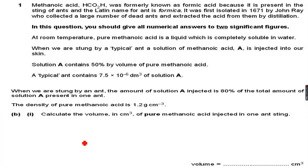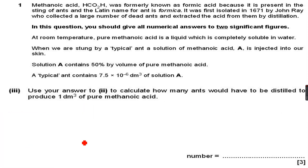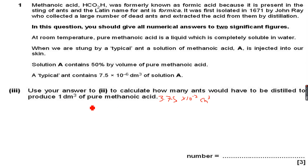Let's go back — use your answer to question 2, which was 3.75×10⁻³ centimeter cube. Use that answer to calculate how many ants would have to be distilled to produce 1 dm cube of pure methanoic acid. So this is 1 dm cube, and we need to convert it: 1 dm cube equals 1000 centimeter cube.